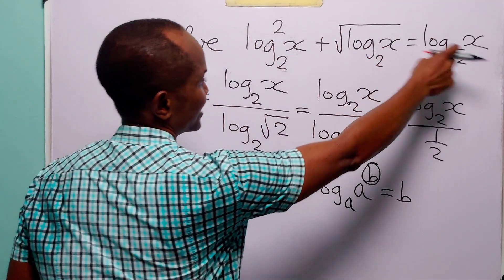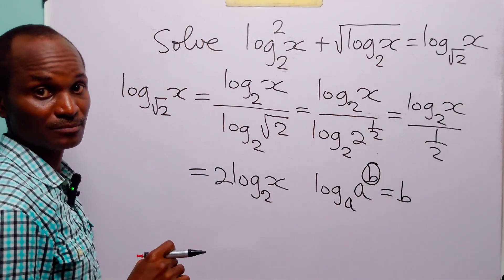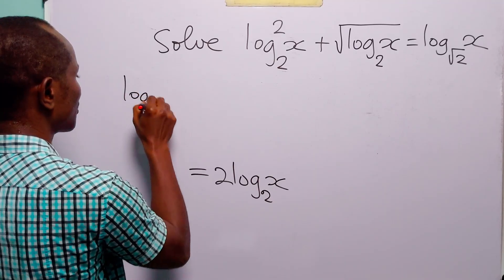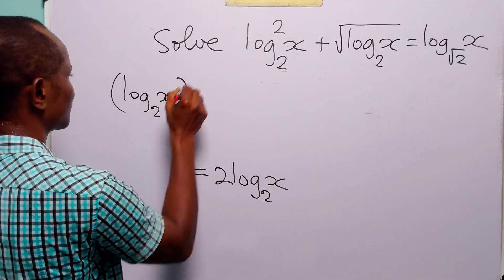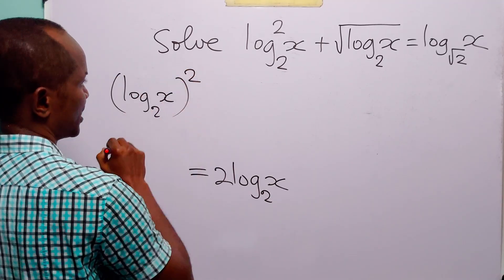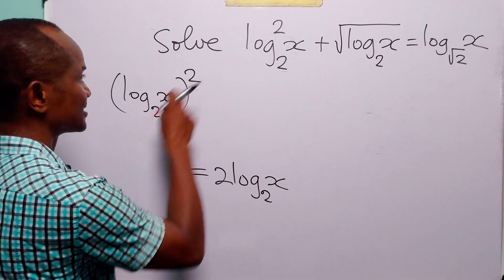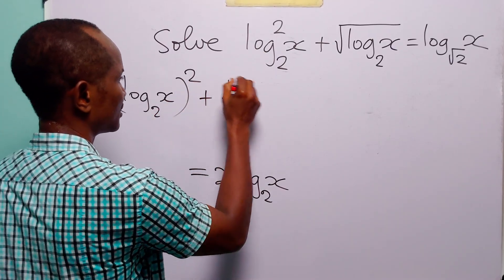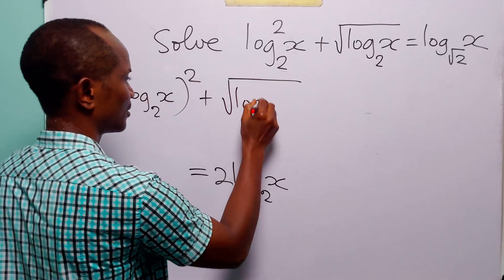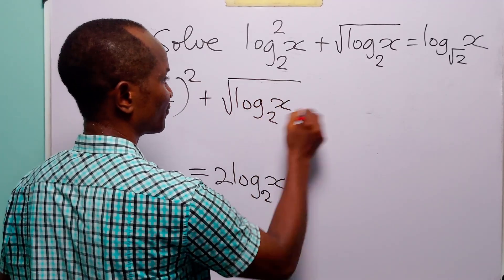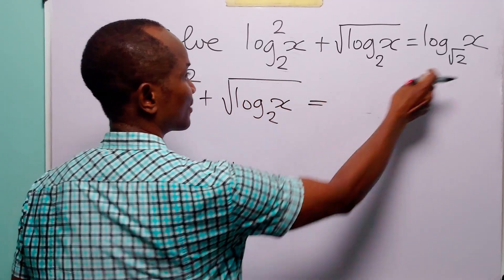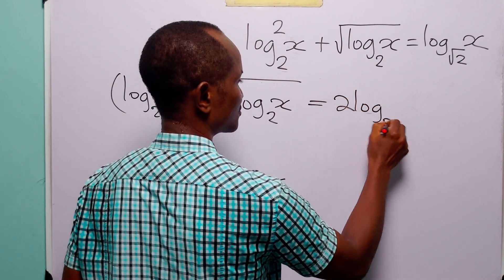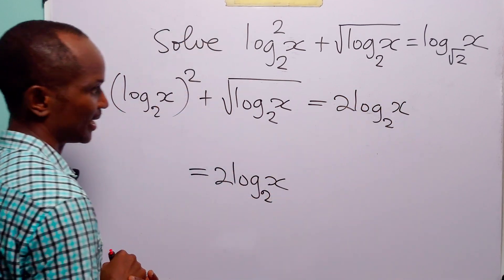Now let us rewrite the original equation. Here we have log to base 2 of x squared plus the square root of log to base 2 of x is equal to 2 times log to base 2 of x.